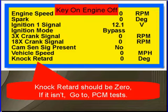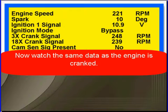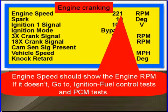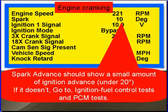Knock retard should be zero — if not, test the PCM. Now watch the same data as the engine is being cranked. Engine speed should show engine RPM; if it doesn't, go to ignition fuel control test and PCM test. Spark advance should show a small amount of ignition advance — what's a small amount? Anything under 20 degrees.